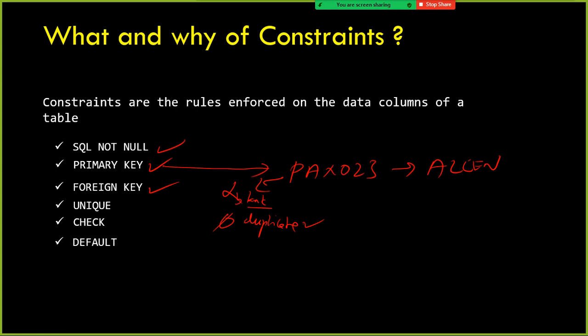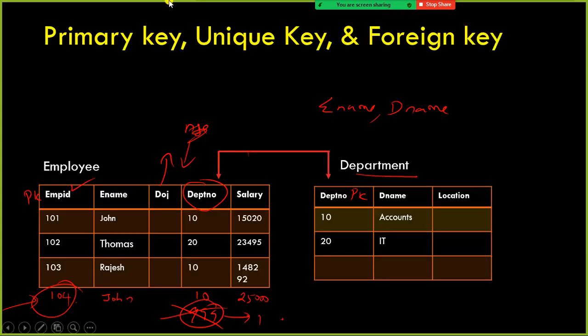Next is the unique key constraint. It is similar to the primary key constraint, but the difference is that while a primary key column can store unique values, the unique constraint allows you to store one null value in that column. Why? Because not all people have a phone number, for example. You can enforce a unique constraint on a phone number column, but some people may not have a phone number. Unique constraint ensures no duplicate values are inserted into a specific column but allows only one null value.